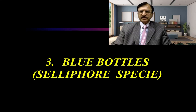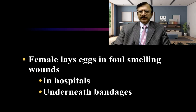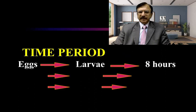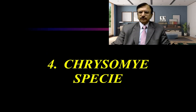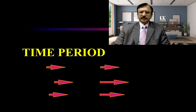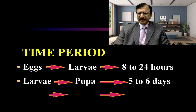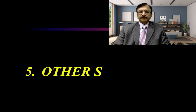The blue bottle fly, or Calliphora species — females lay eggs in foul-smelling wounds and in hospitals underneath bandages. Time period: eggs into larvae in 8 hours, larvae into pupae in 4 to 8 days, and pupae into adult fly in 6 to 12 days. For the Chrysomya species: eggs into larvae in 8 to 24 hours, larvae into pupae in 5 to 6 days, and pupae into adult flies in 7 to 10 days.